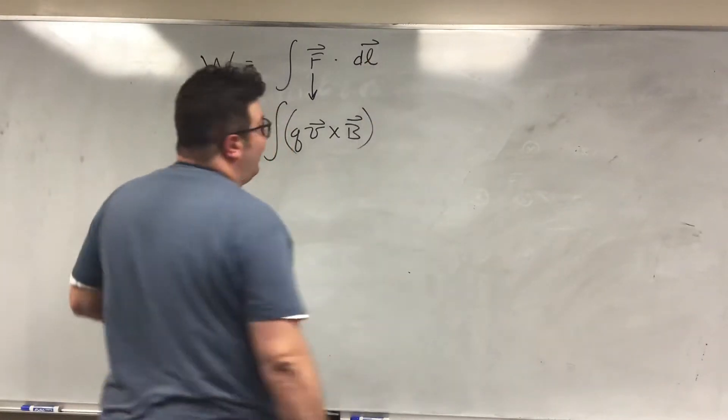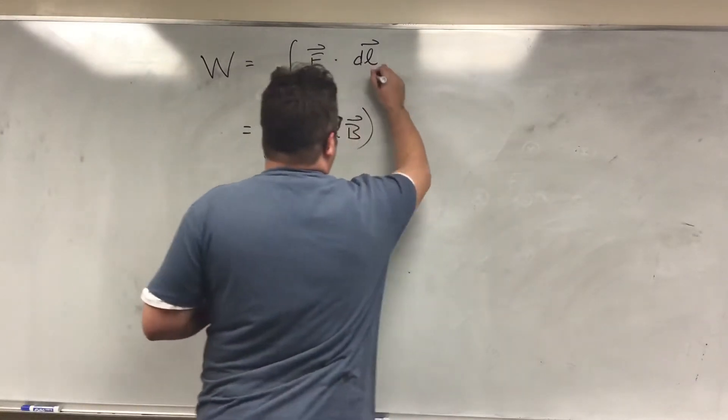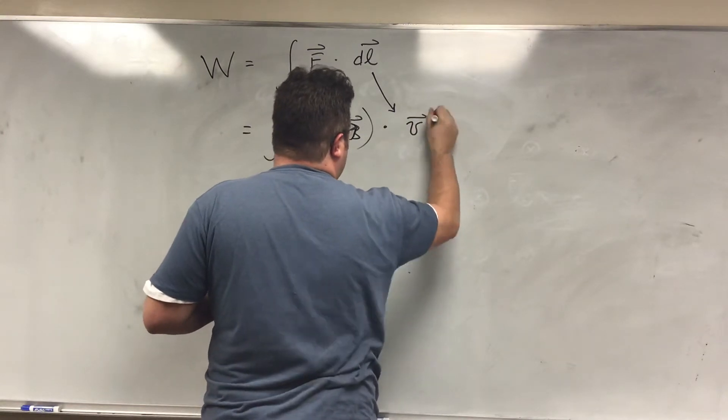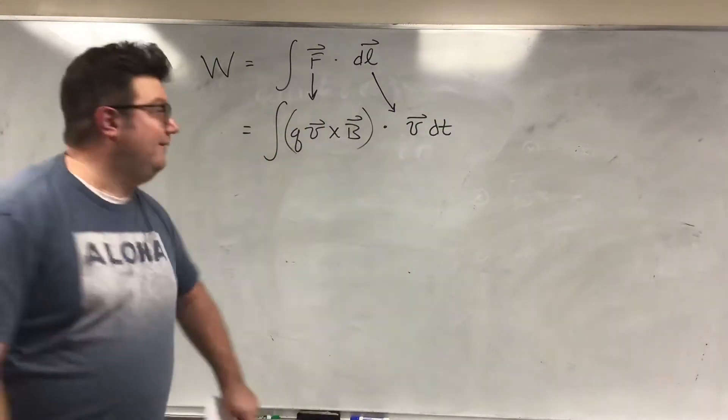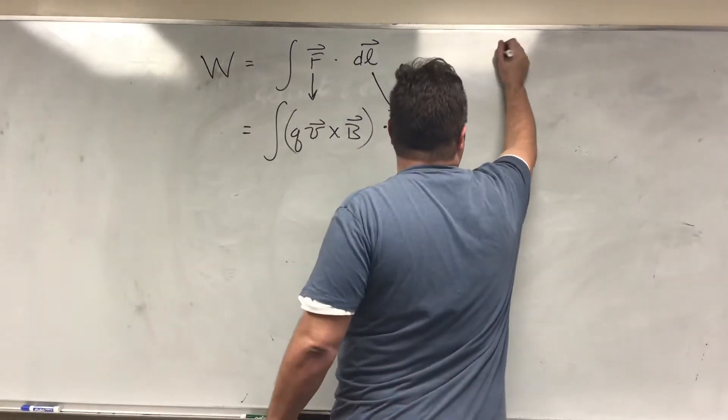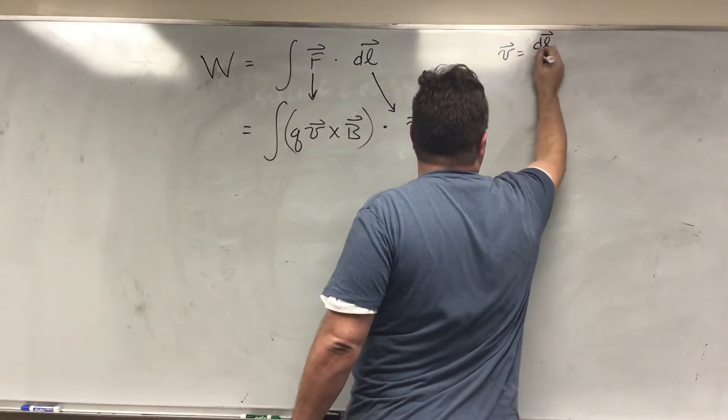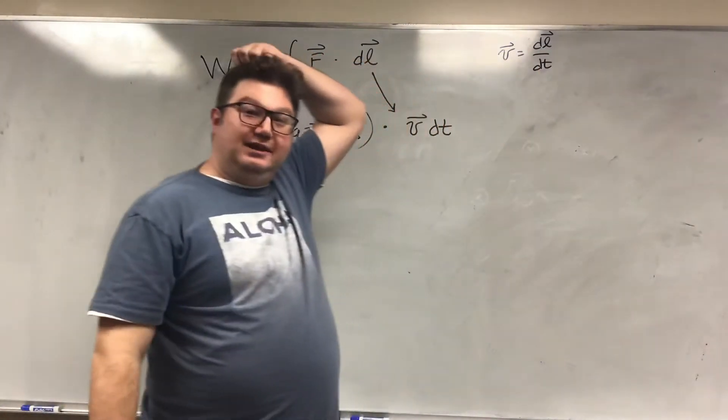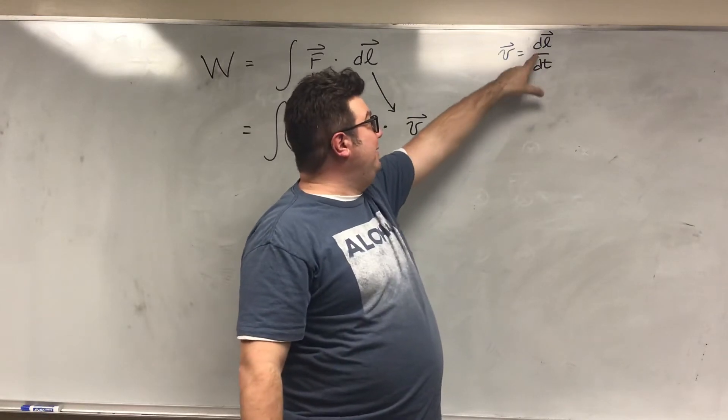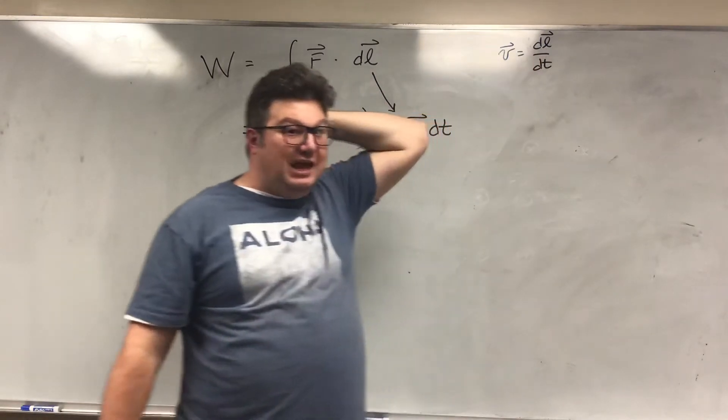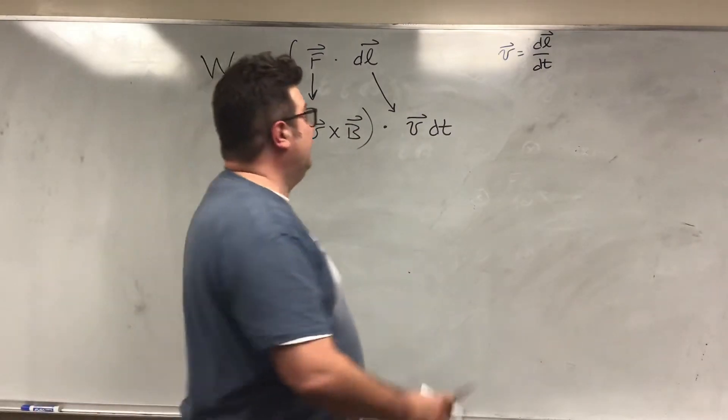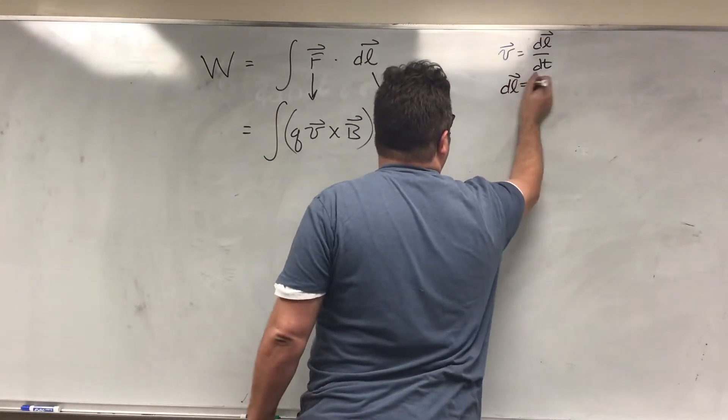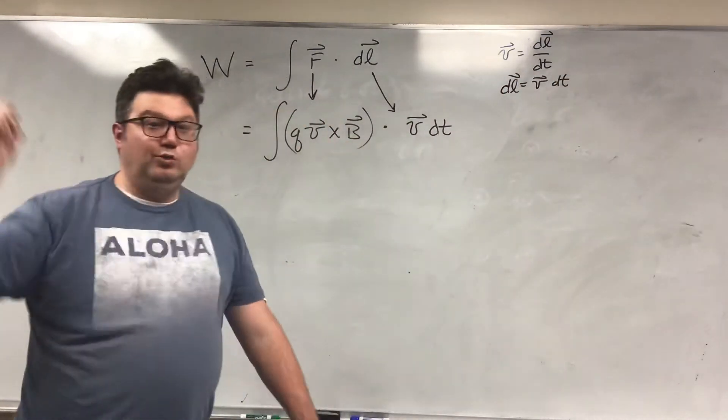And DL, we're going to write in a weird way. We're going to say that DL is V DT. Let's prove that. The velocity is equal to DL over DT, right? That's going to be the change in my path over the change of time. That's what the velocity is. So I just multiply and you get DL is equal to V DT. Woohoo!